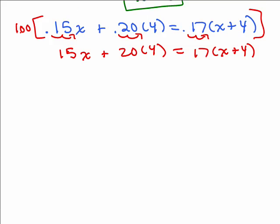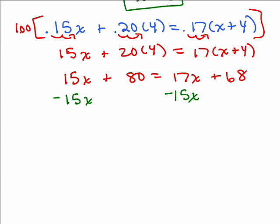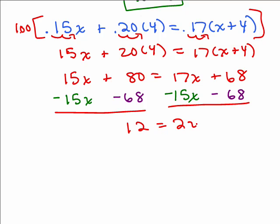All right, let's continue. So now we've got 15x plus 80 equals 17x plus 68, no decimals in my problem. I'm still going to go ahead and subtract 15x from both sides, and at the same time, I'm going to subtract 68 so that I end up having my constants on the left and my variables on the right, but when I divide by 2, I'm still going to get x equals 6 for my answer.